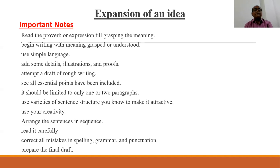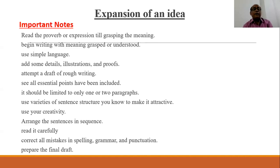He must use a variety of sentence structures to make it attractive. Use creativity. Arrange the sentences in sequence — when points, illustrations and proofs have been given, they must be arranged in sequence. After that, the student should read it carefully, and if he finds any mistakes regarding spelling, grammar or punctuation, he must remove them. At last, he must prepare the final draft.